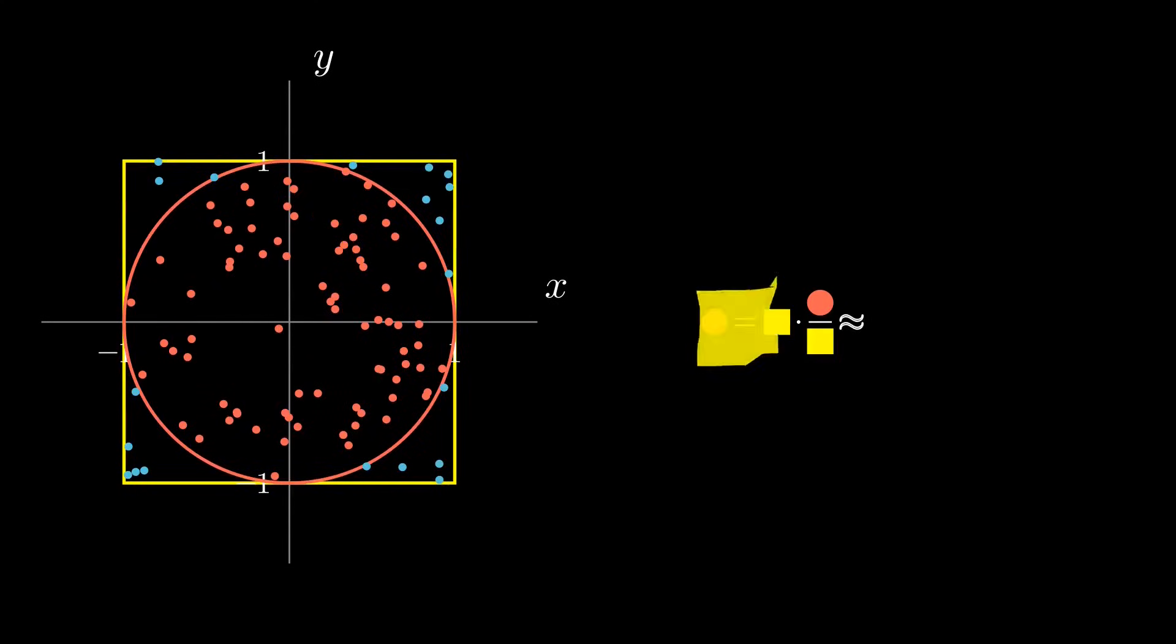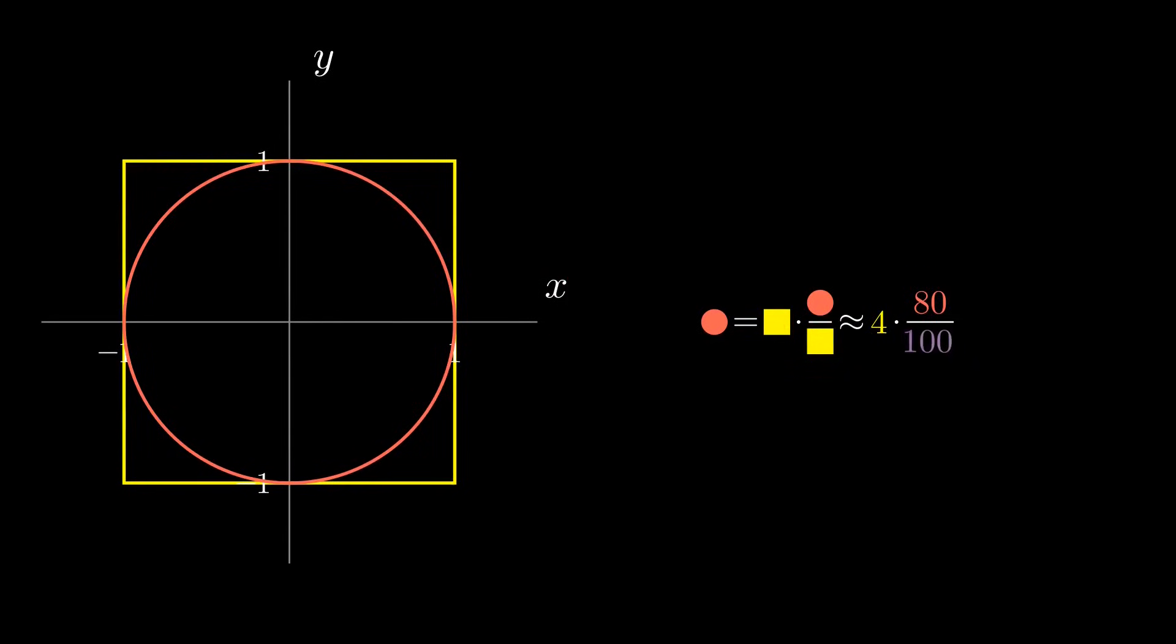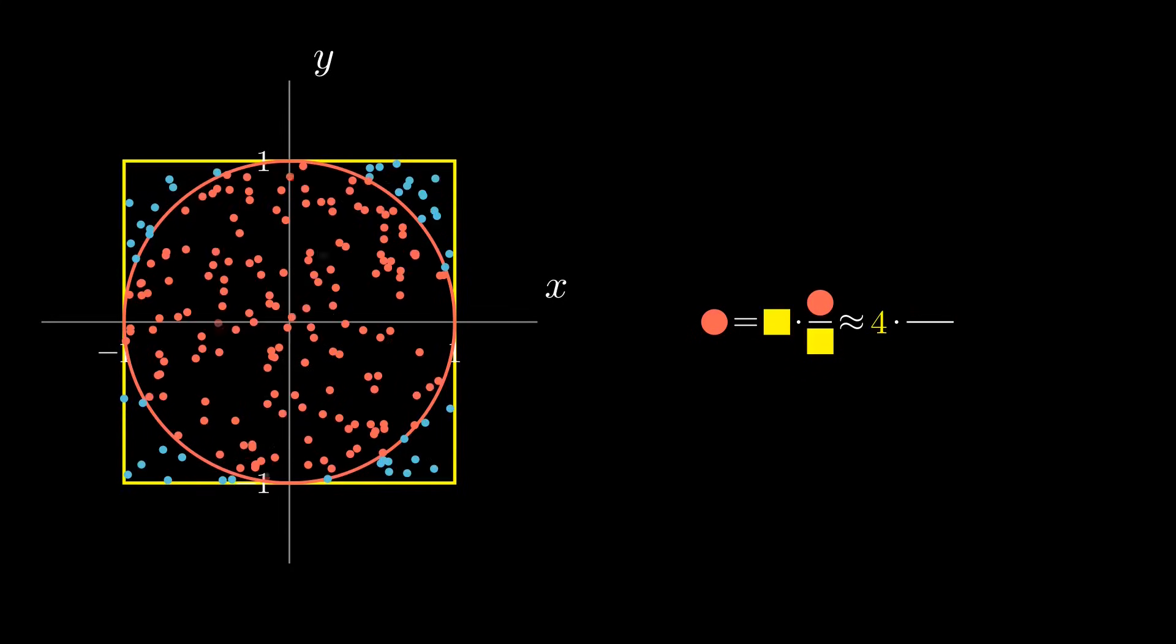Since we can easily compute the area of the square, we can use this ratio to approximate the area of the circle. As expected, the probability that our approximation is accurate increases as we sample more points.